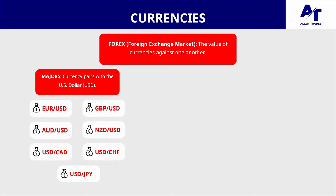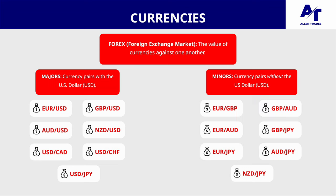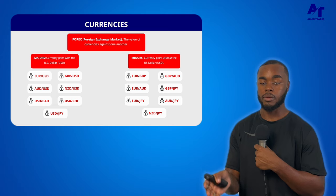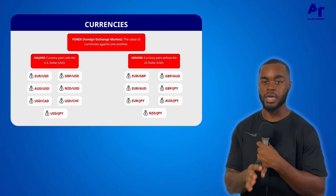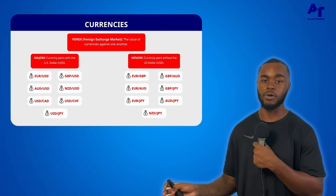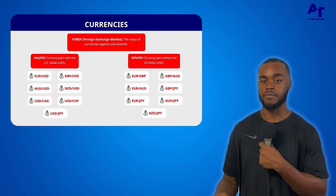All the other majors also have the potential to trade — those four just tend to move the nicest. For the second category, we have the minors, which consist of EUR/GBP, EUR/AUD, EUR/JPY, GBP/AUD, GBP/JPY, AUD/JPY, and NZD/JPY. Majors means the U.S. dollar is involved; minors mean the U.S. dollar is not involved.